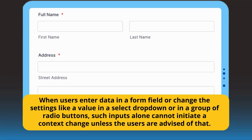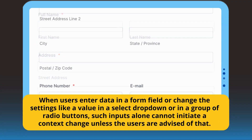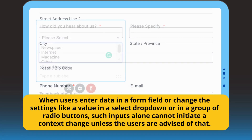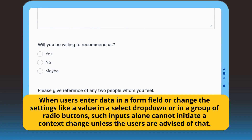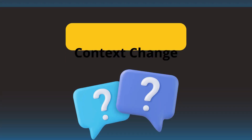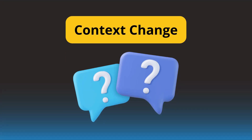When users enter data in a form field or change the settings like a value in a select drop-down or in a group of radio buttons, such inputs alone cannot initiate a context change unless the users are advised of that. But what is context change here?